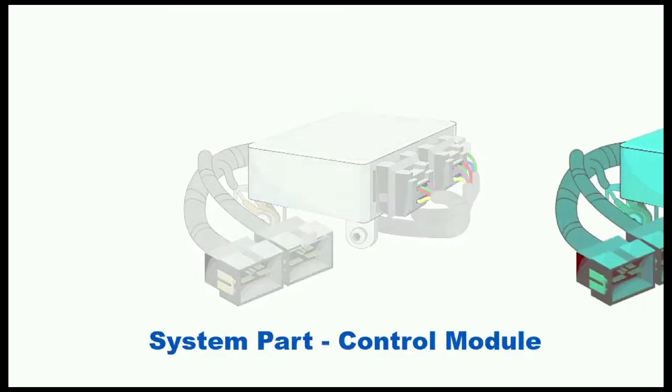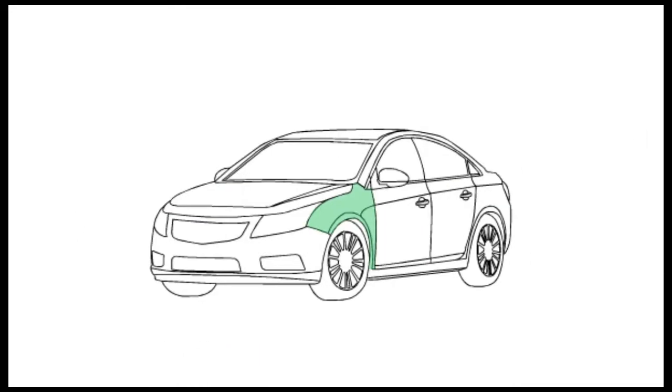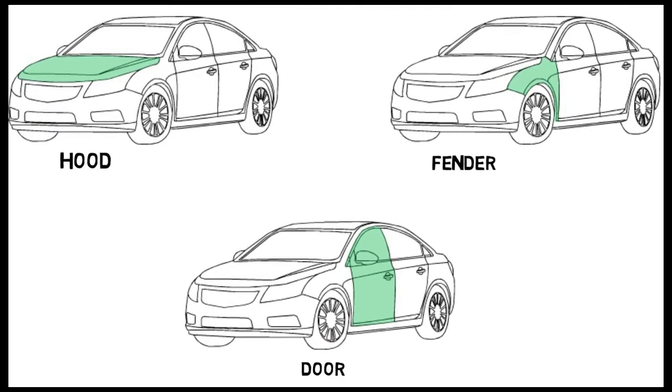If you replace a system part like a sensor or control module with an alternative part, you'd expect a performance change. But what about a change to an exterior part? Can a body part affect the vehicle safety systems?